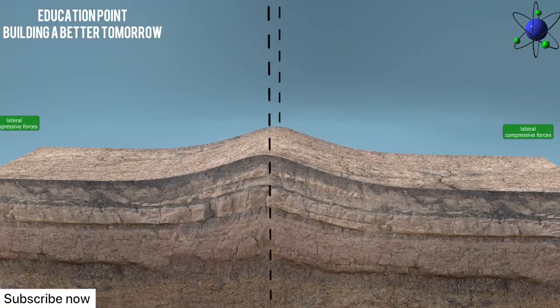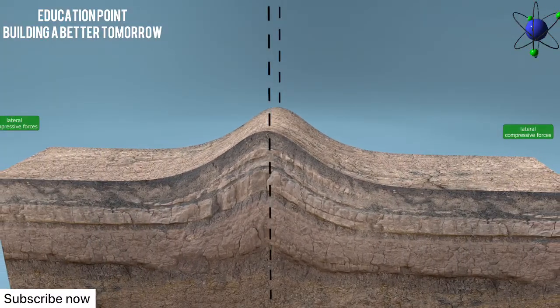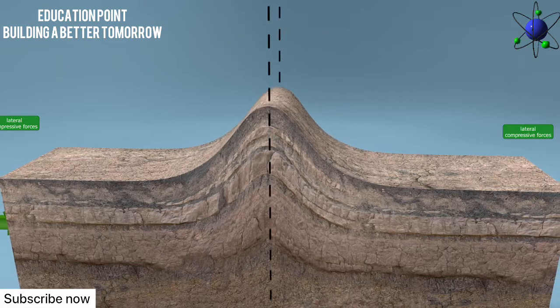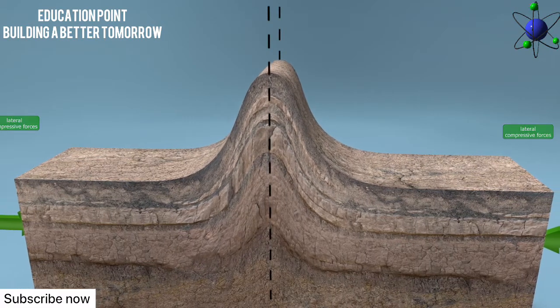Sometimes, the compressive forces are equal. When this occurs, a symmetrical fold is formed. This is also called a vertical fold.